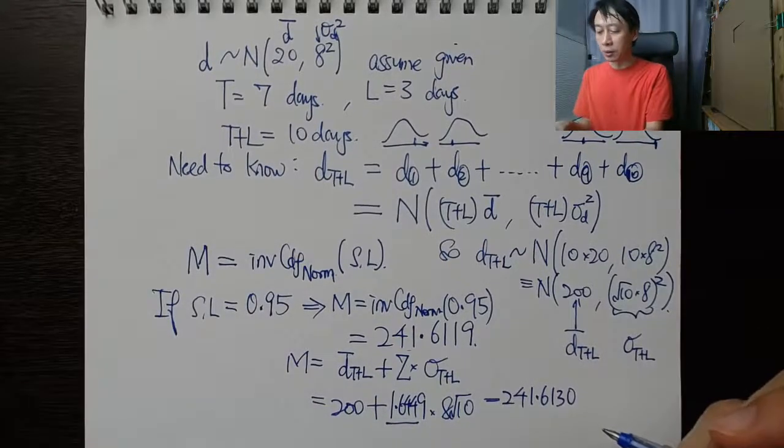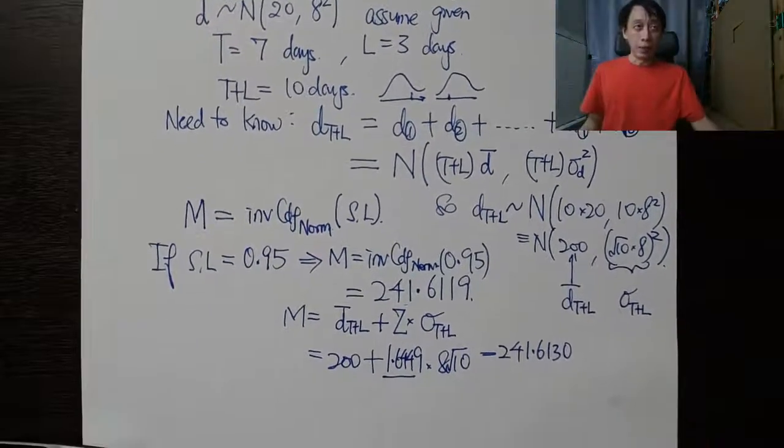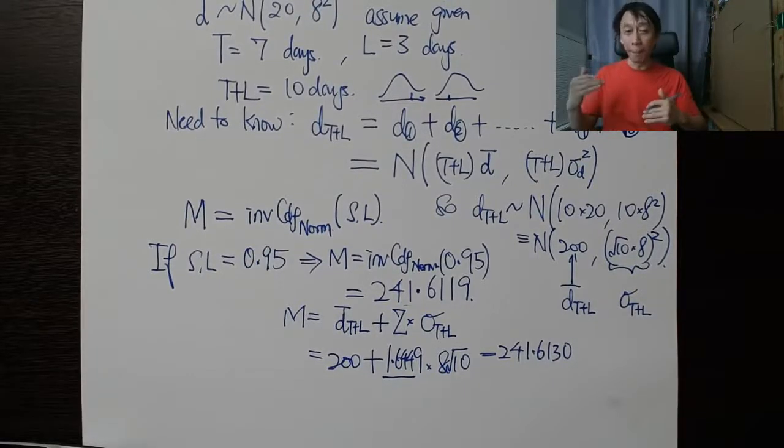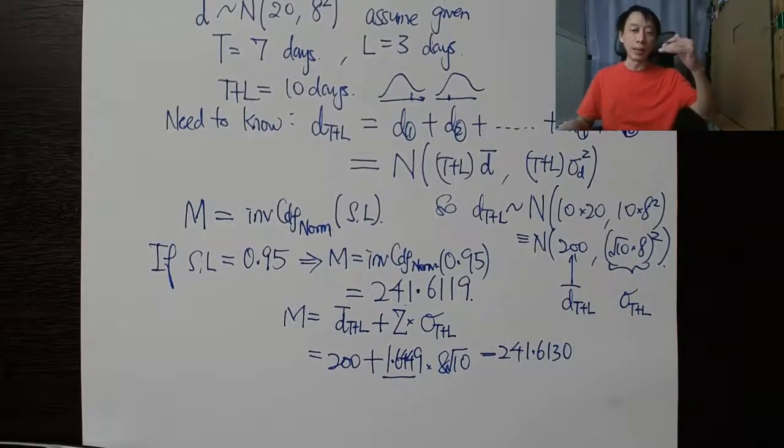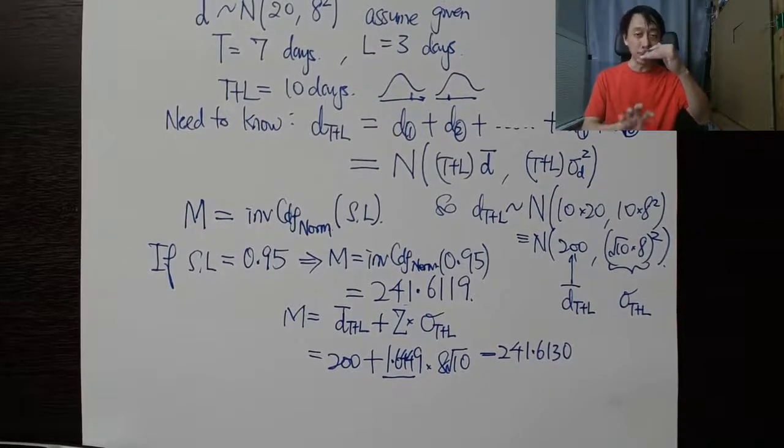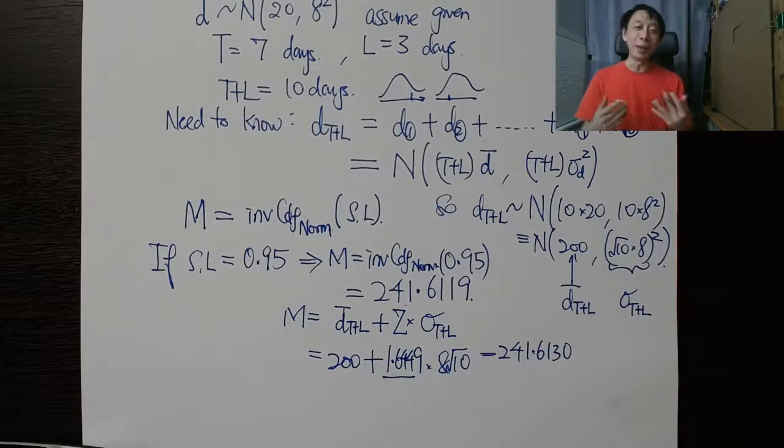That shows how we can calculate how many to order, because once we know M, the target inventory level, we use that minus the count that we get at every warehouse visit, and then we know the quantity to order. When do we order? Every T days. How many do we order? M minus the count.